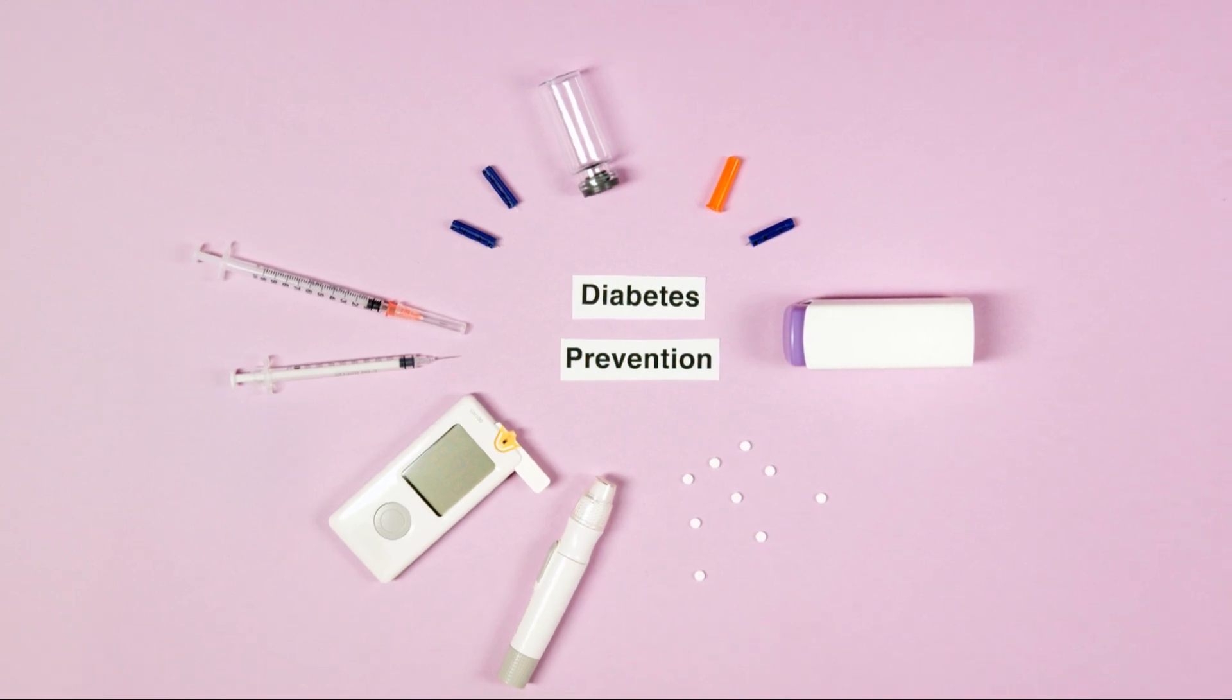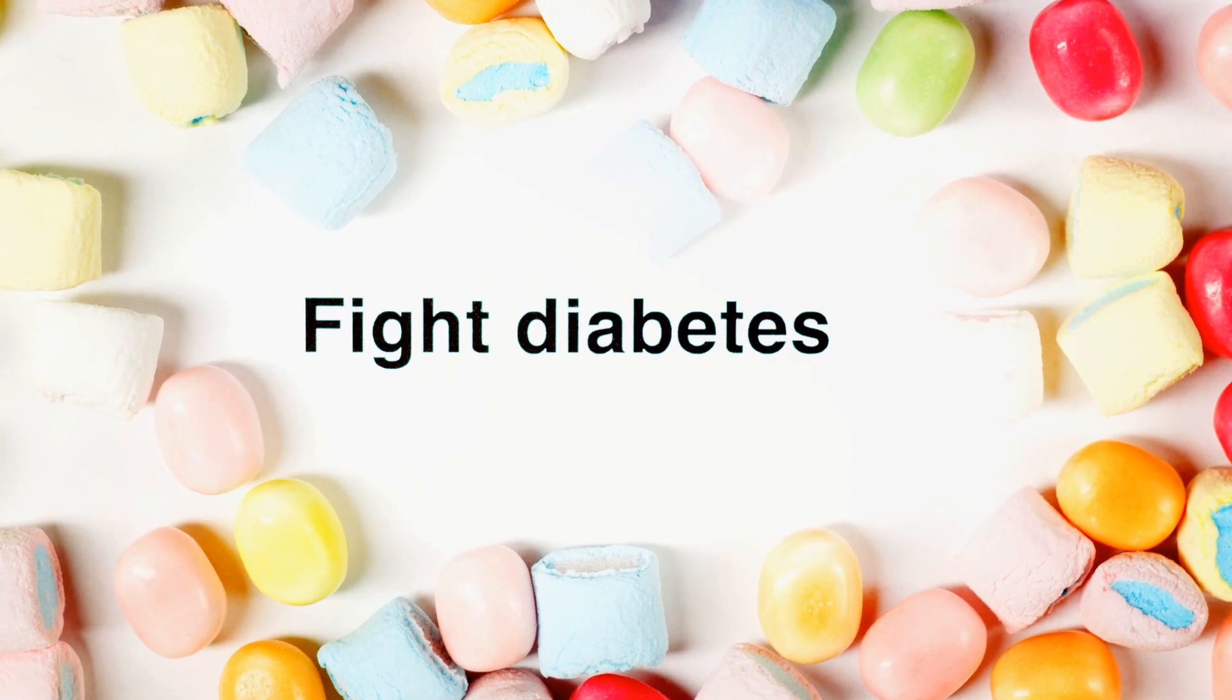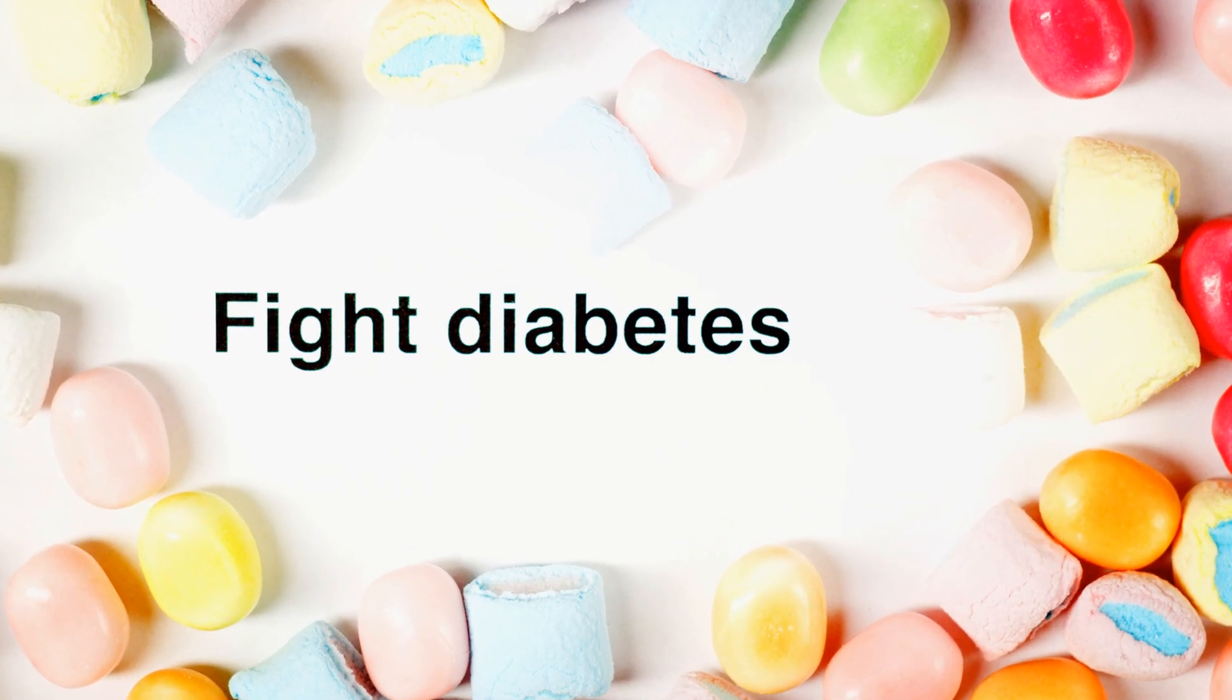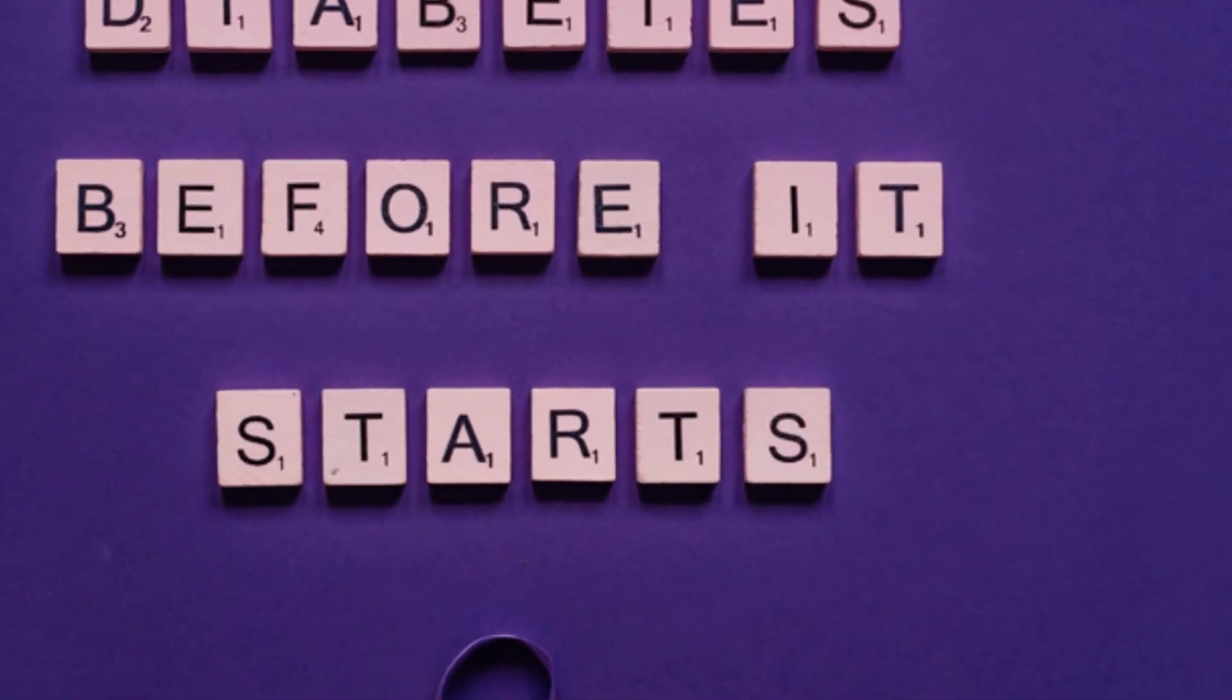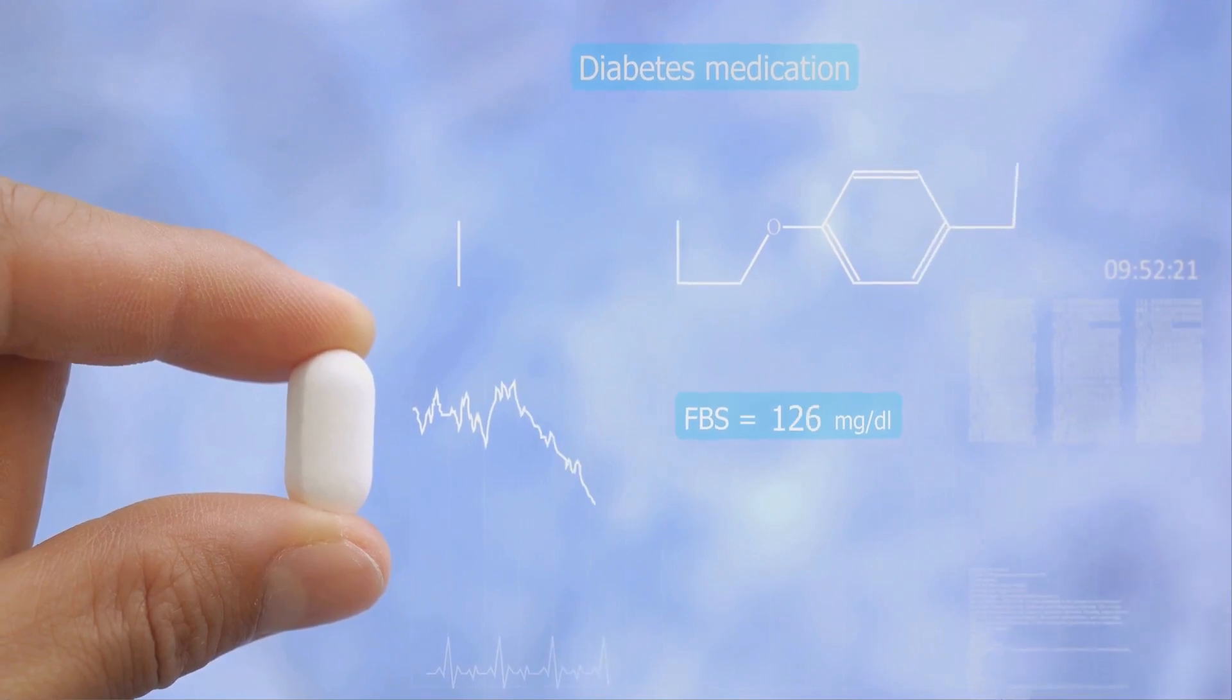Intermittent fasting is an eating pattern that may help improve insulin sensitivity and reduce stress on beta cells. This involves cycling between periods of eating and fasting. It can be effective for some people, but it's not a one-size-fits-all solution. It may not be suitable for everyone, especially those with certain medical conditions.